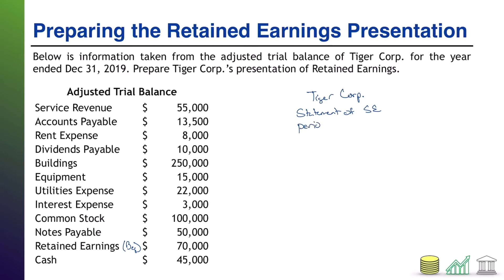So I'm going to put 'period ended' and then December 31, 2019. All right, so there's my header. For this one, I'm going to do things a little differently than I tend to do with other financial statements. Since this is not a full-fledged financial statement — it's really just a mathematical calculation — I'm going to lay out what that calculation should look like first, so I know what I'm trying to identify from my list of information.